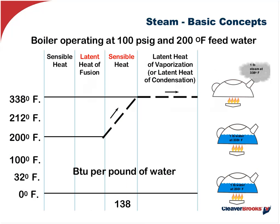If we start with 200-degree feed water and we wish to raise the saturated temperature to 338 degrees, which is the same as 100 pounds, we have to add 138 BTUs per pound to accomplish this. At this point, we still have liquid at 338 degrees. When I apply additional BTUs at this saturated temperature and pressure, I go through a phase change from a liquid to a gas with the water and the steam at the same temperature. What I've added with these additional BTUs is latent energy — that which is used in the process.